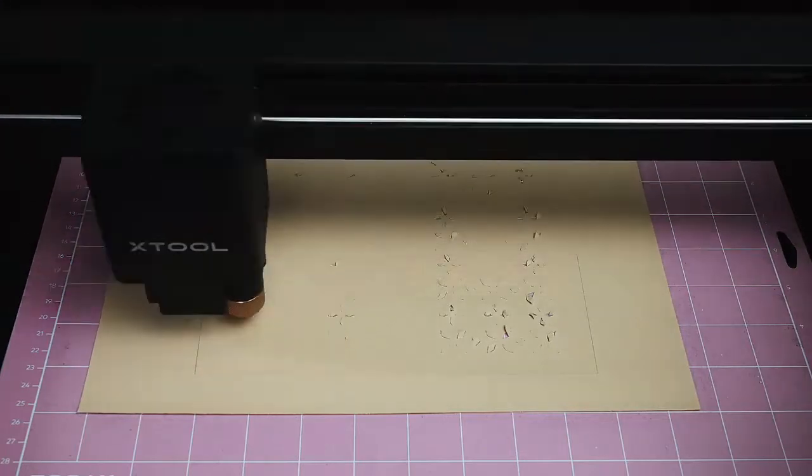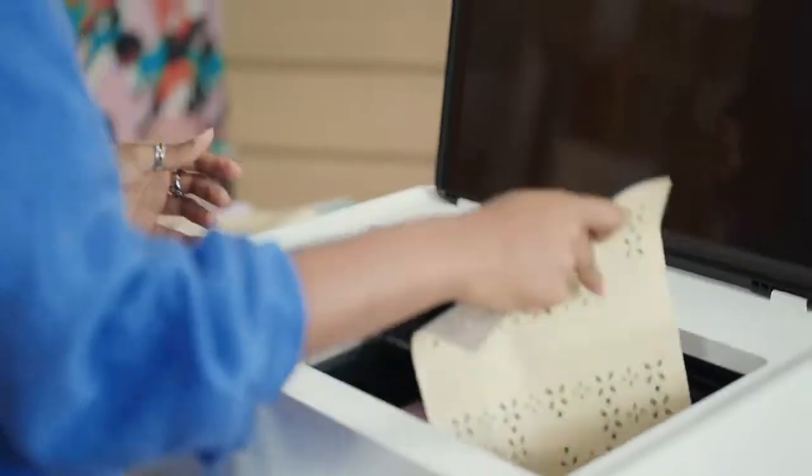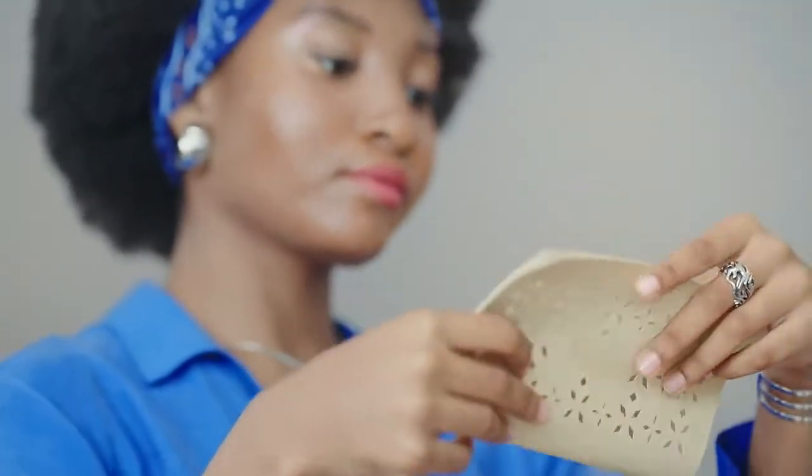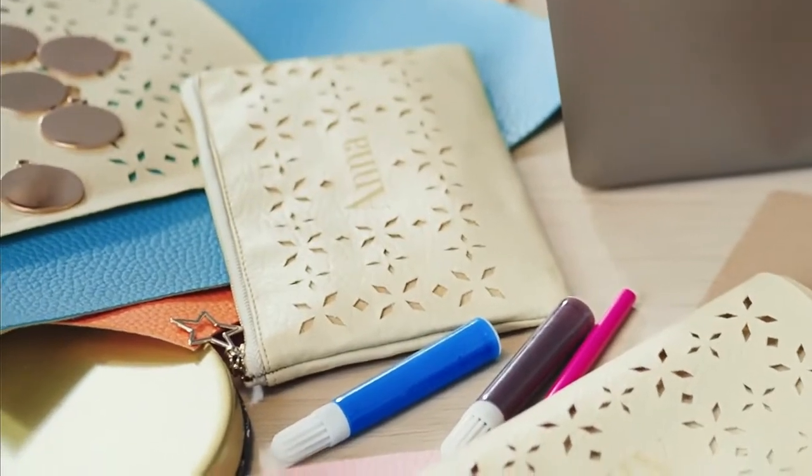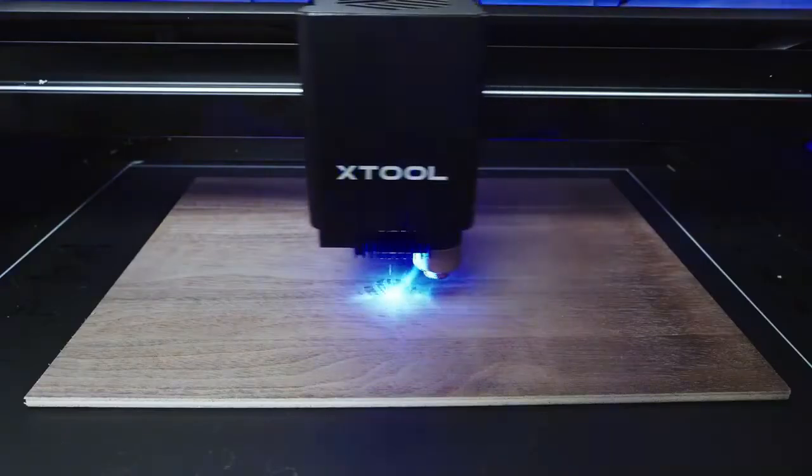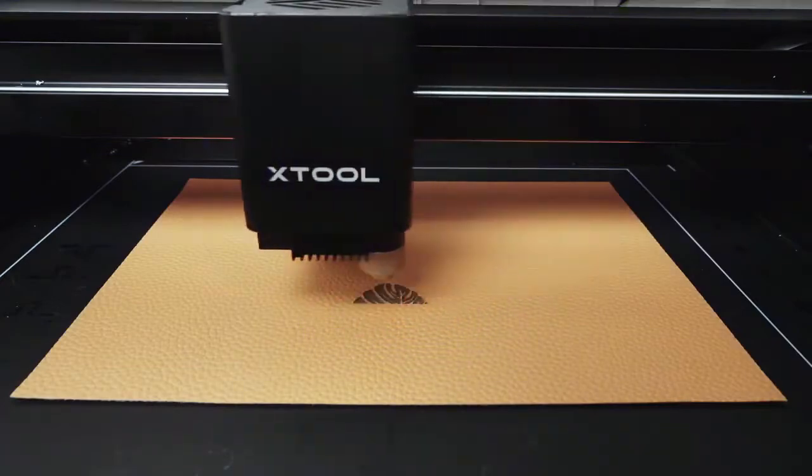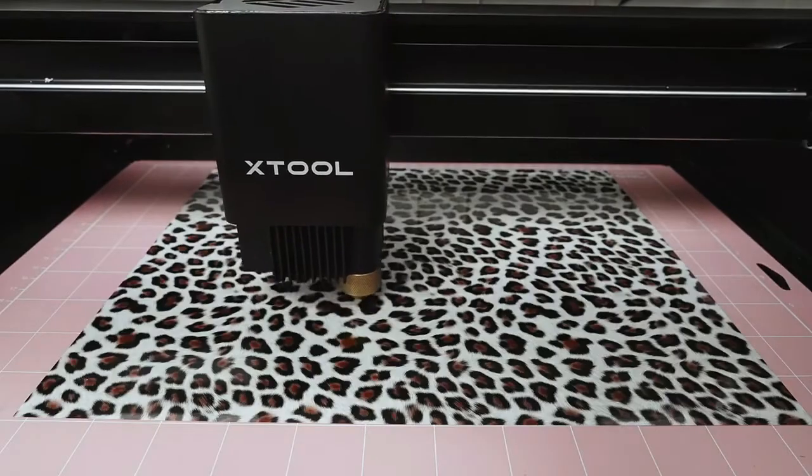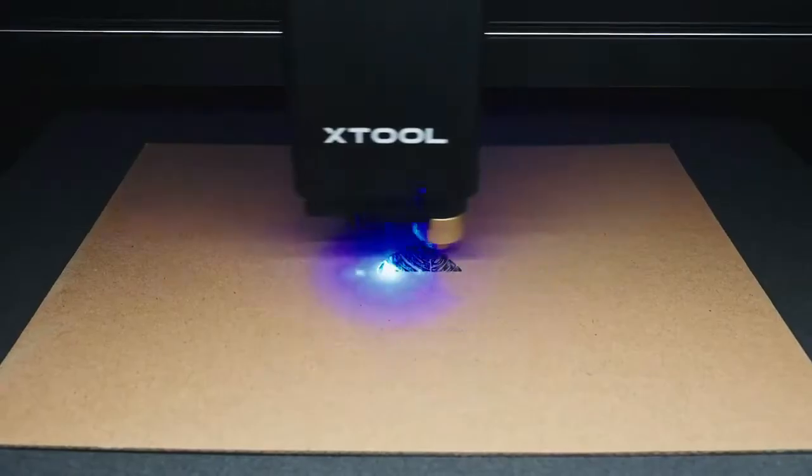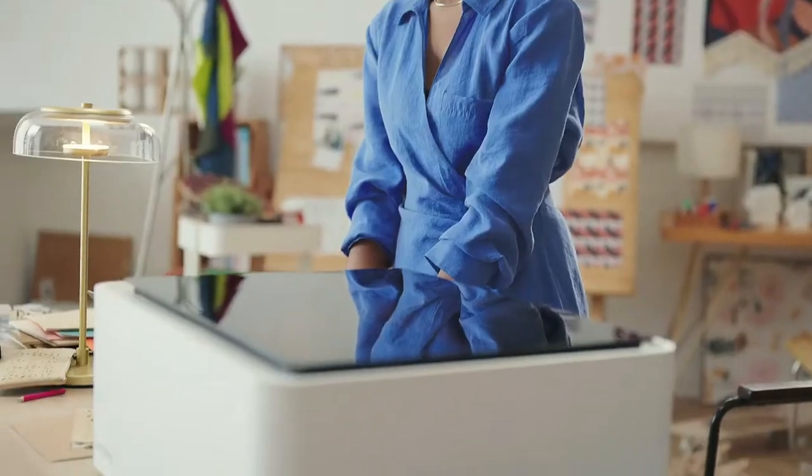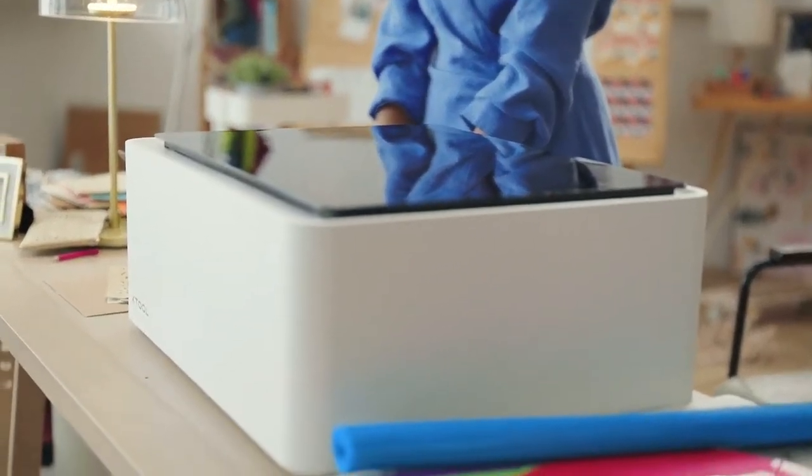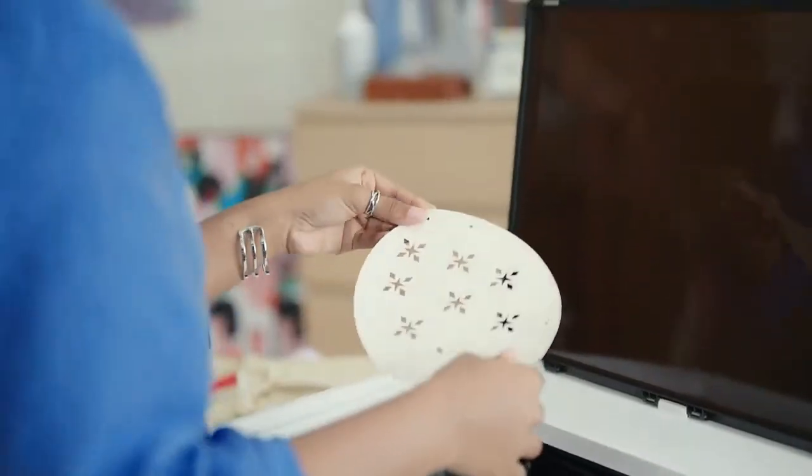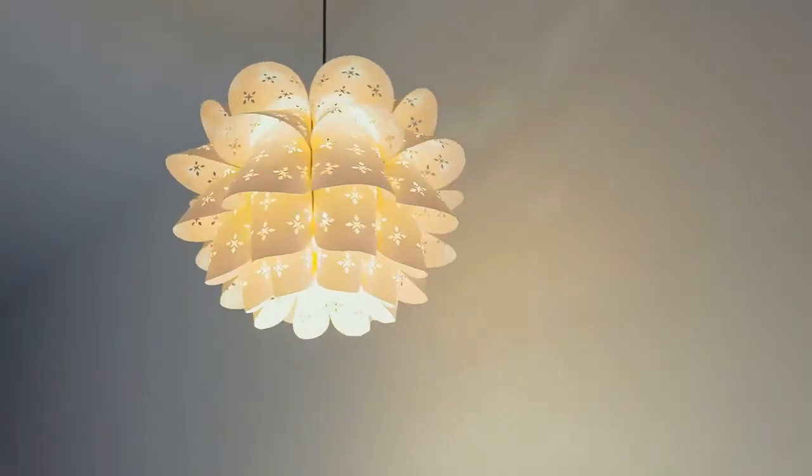M1 is compatible with more materials than any other desktop machine, from soft materials to 8mm tough stuff. Whether you're cutting or engraving wood, leather, delicate paper, vinyl, or fabric, M1 performs well for any need. More materials processed means more possibilities for creation and exploration.